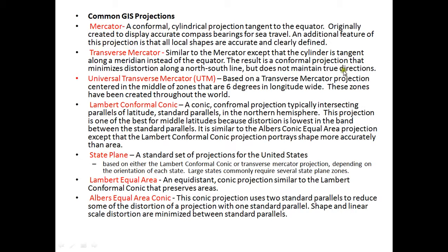The transverse Mercator is similar to the Mercator. It results in a conformal projection that minimizes distortion in the north-south direction but does not maintain true directions. Universal transverse Mercator, or UTM, is based on the transverse Mercator projection and is centered in zones that are 6 degrees of longitude wide.